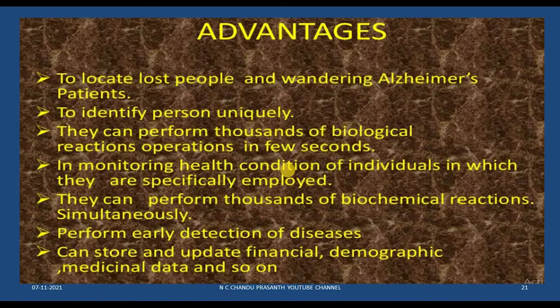Advantages include: locating lost people and wandering Alzheimer's patients, uniquely identifying a person, performing thousands of biological reactions in very few seconds, monitoring patient health conditions, detecting diseases, and storing financial data. However, the storage capacity is very limited — it can store only 10 to 15 digits.